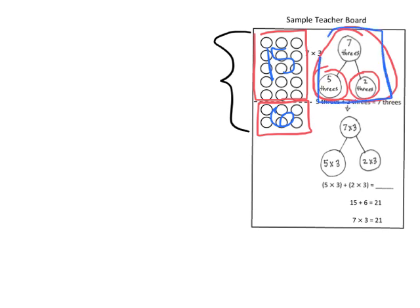This number bond up here using units as in the labels threes can be rewritten as seven times three equals five times three plus two times three and that's where we would get the 21.